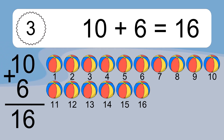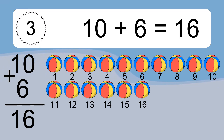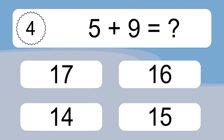Let's count it. 1, 2, 3, 4, 5, 6, 7, 8, 9, 10, 11, 12, 13, 14, 15, 16. 5 plus 9 equals what?